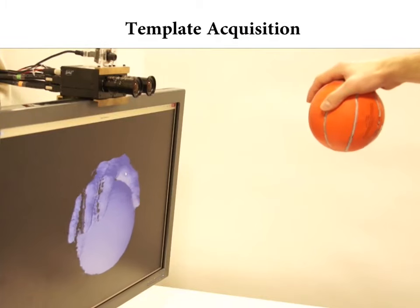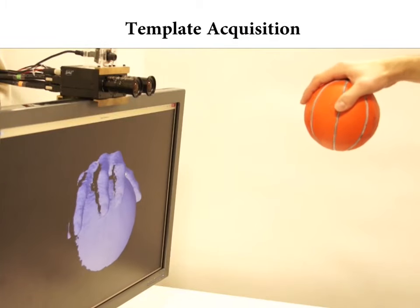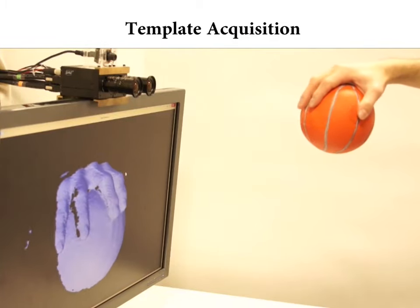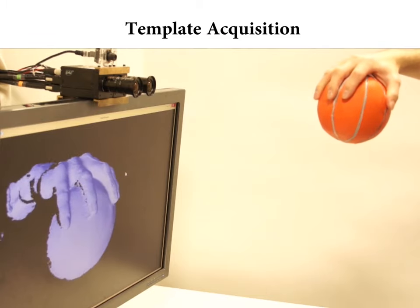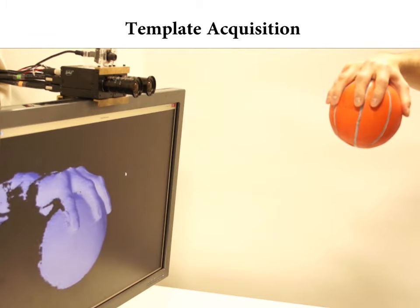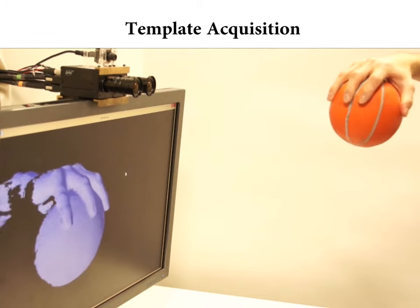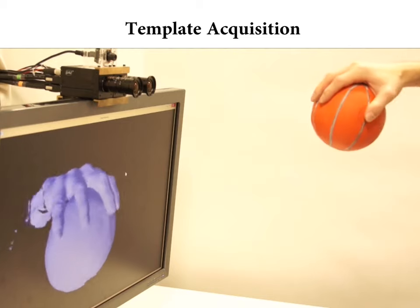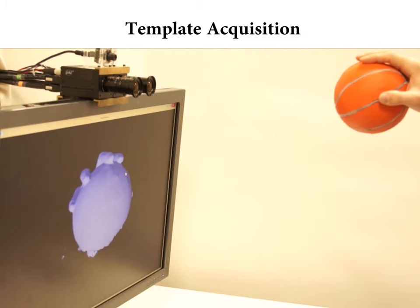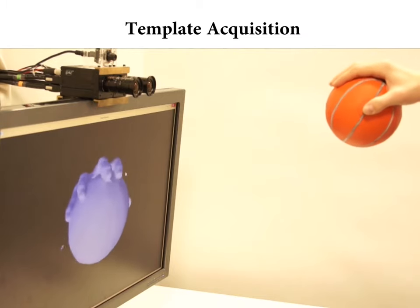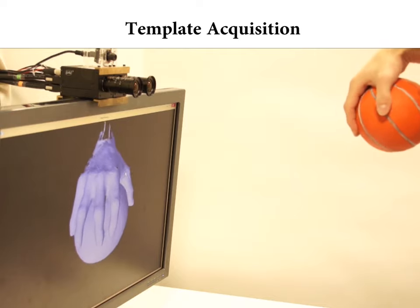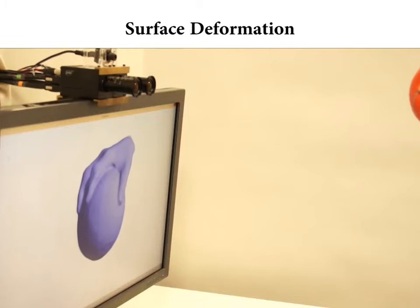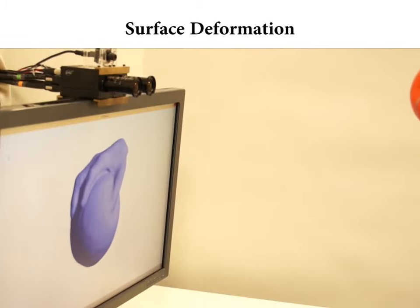Since we don't rely on surface priors such as skeletons or parametric shape models, we can process arbitrary input objects. In this example, we capture deformations caused by compressing a basketball.